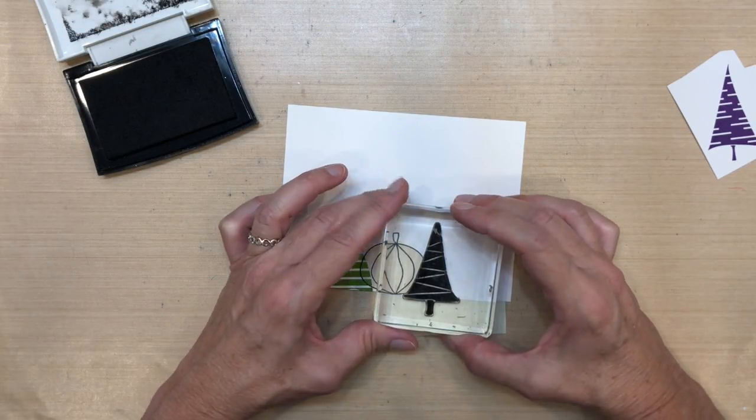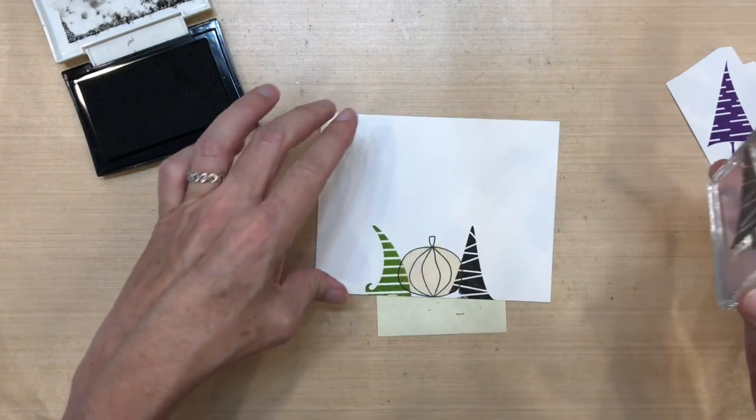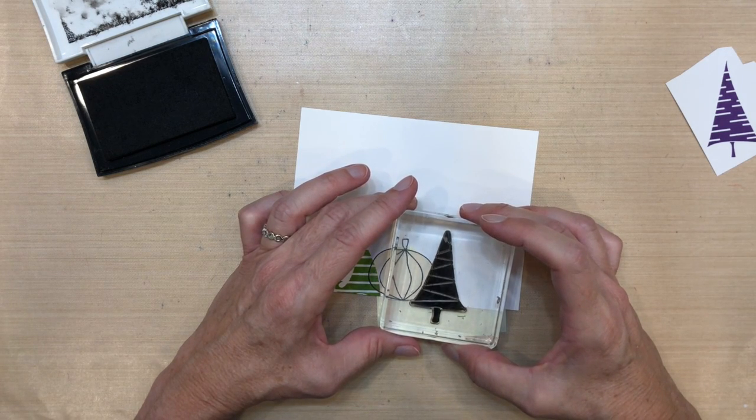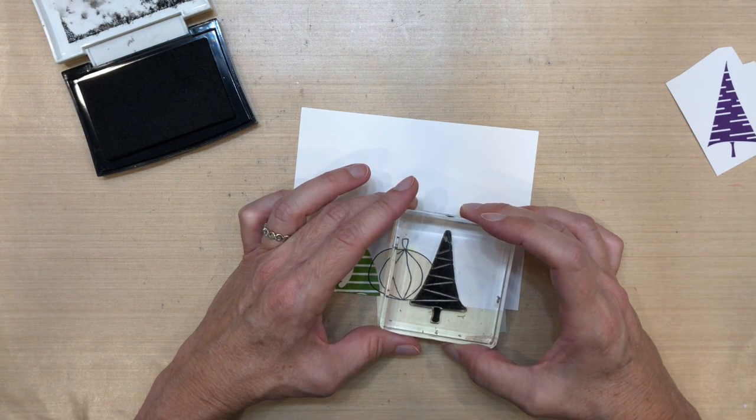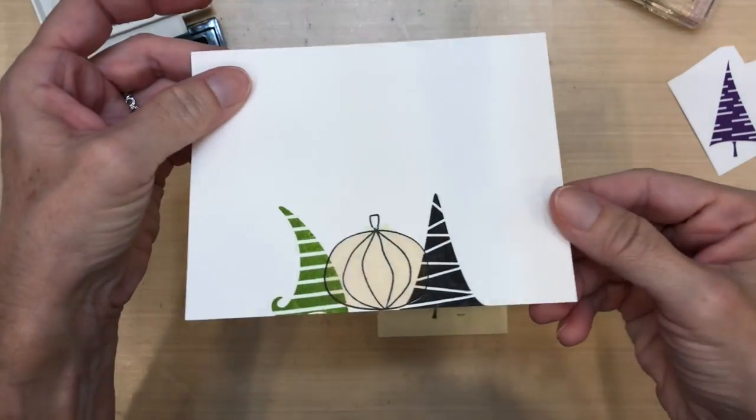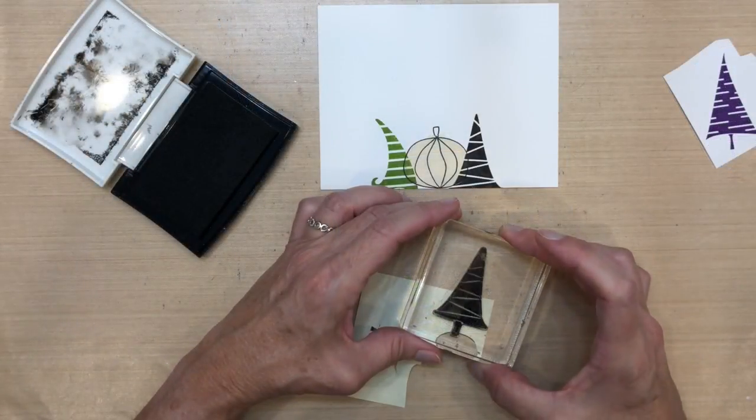My next color is VersaFine Black Onyx. You can see when I stamped it, it didn't stamp the whole thing. So I really took a huge risk here to put it right back where I found it and stamped it down, and lucky enough it came out perfectly. So here's a close-up.